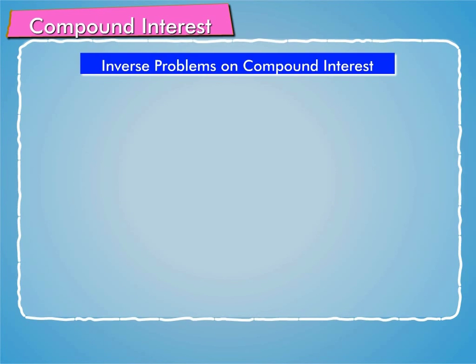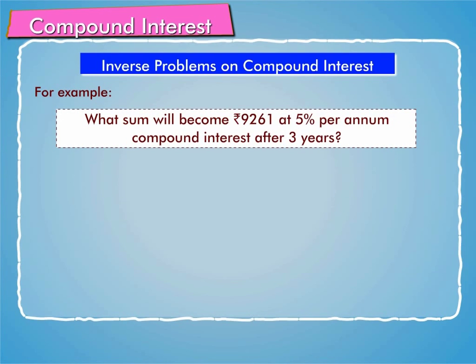Let's solve some inverse problems on compound interest. Let us understand this by taking an example. What sum will become Rs. 9,261 at 5% per annum compound interest after 3 years?